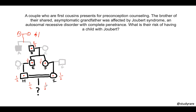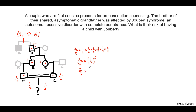A shortcut we can use to calculate the risk of having an affected child is to multiply each of these probabilities together. We take two-thirds times one-half, times one-half, times one-half, times one-half, times one-half, times one-half — so there are six one-halves. That's two-thirds times one-half to the sixth power, which gives us two-thirds times one over sixty-four, and simplifying further, we get one over ninety-six.